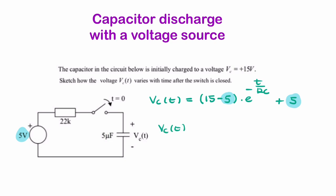So VC = 5 + 10e^(-t/0.11), and if you wanted to sketch that,